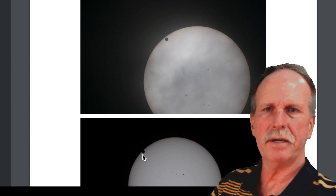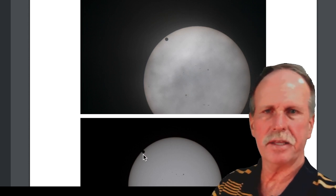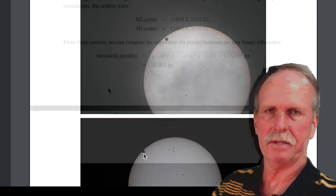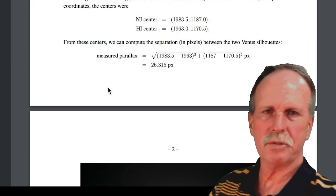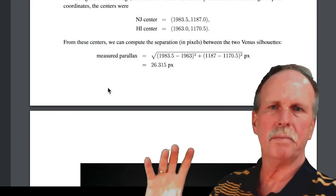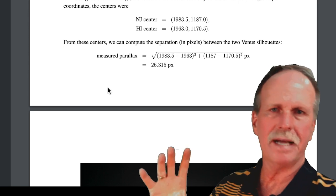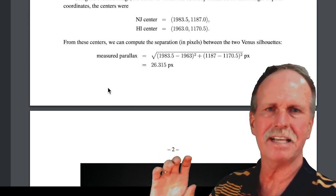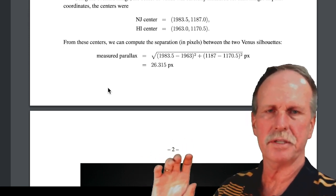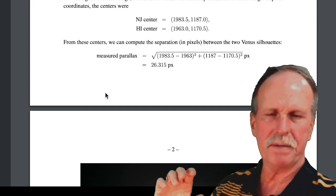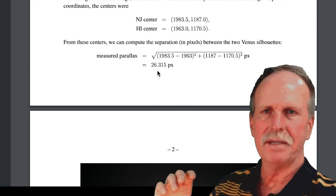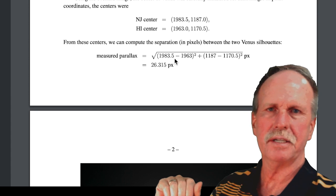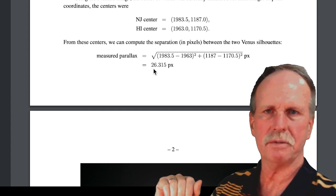As you can tell, they are slightly off, just like the other one was. That's the parallax angle. To calculate the parallax, what he did was he normalized the images, lined up sunspots to sunspots, and made sure that the size of the images were the same. Then he counted pixels to the center of each of those images of Venus, and found the distance between the two.